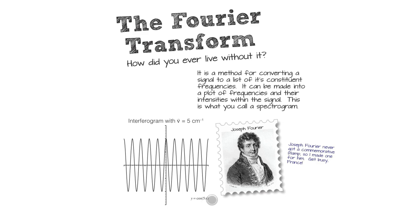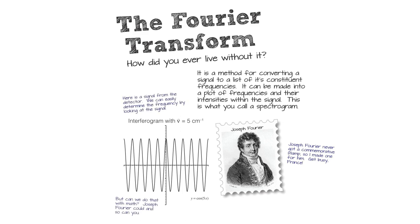Do you think you could tell that this is five per centimeter? I bet you could. You just take out a ruler, measure it, and say, hey, it went up and down five times in a centimeter — that's pretty simple. But we can do this with math. We don't have to just measure it. We can do this with a simple mathematical algorithm: the Fourier transform.